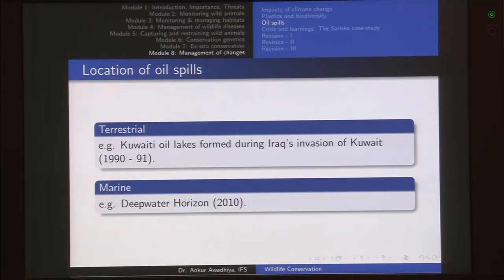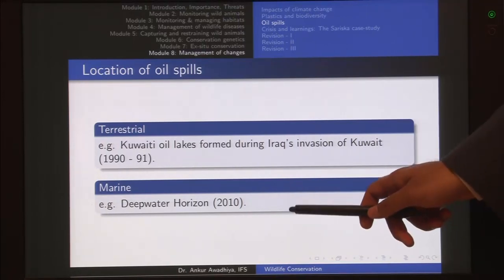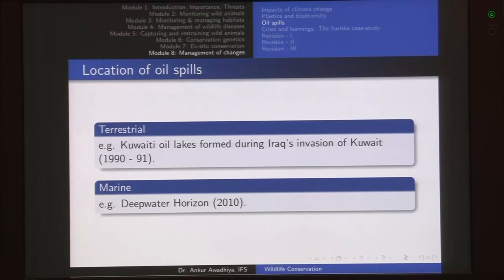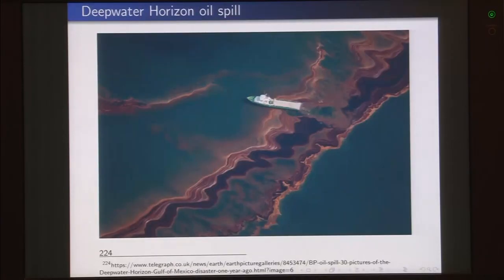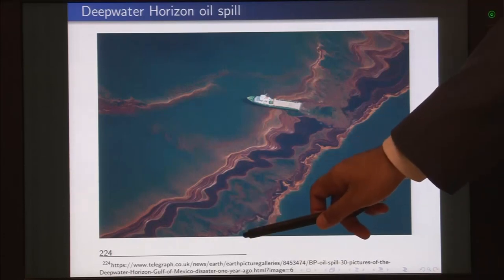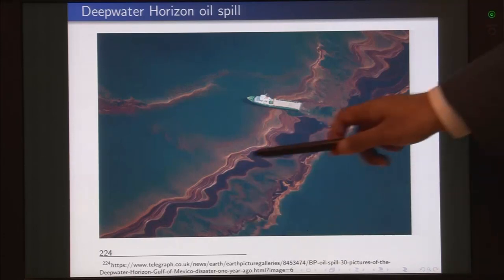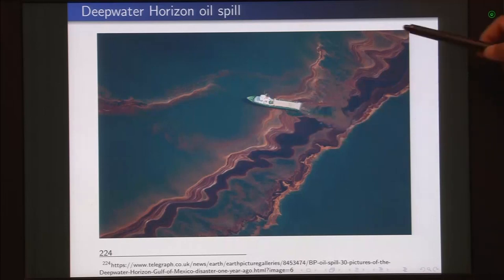The second type is a marine oil spill, which occurs in the seas and oceans. A very good example from the recent past is the Deepwater Horizon accident that happened in 2010. In that case, quite a lot of oil came out from the oil rig and spread all over the ocean in the Gulf of Mexico.